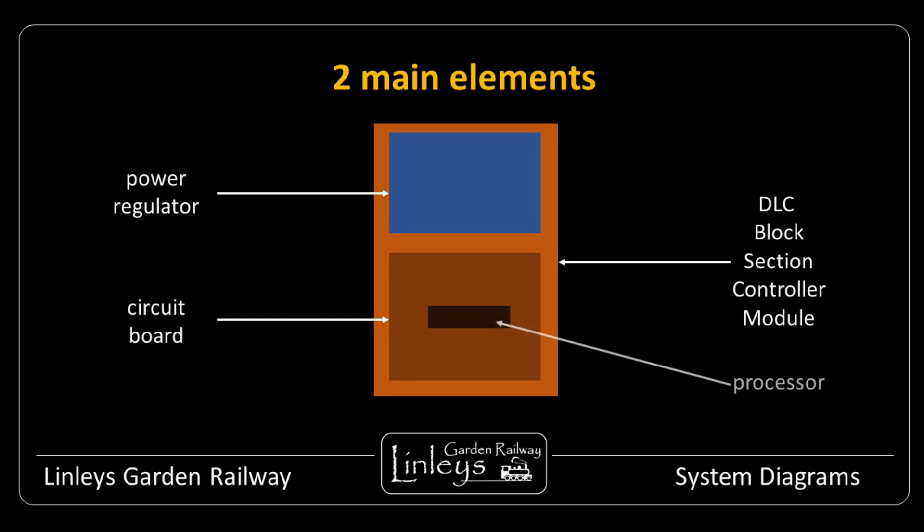The control board has a reprogrammable processor at the heart of the unit, and this runs all the local logic for the block section, dealing with most of the inputs and outputs needed to regulate the passing of a train through the block.